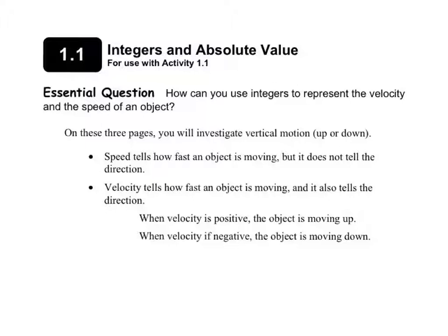On these three pages, you will investigate vertical motion — up or down. Speed tells how fast an object is moving, but it does not tell the direction. Velocity tells how fast an object is moving, but it also tells the direction.